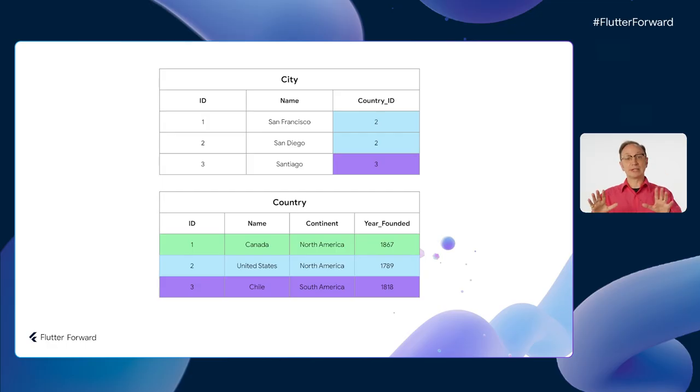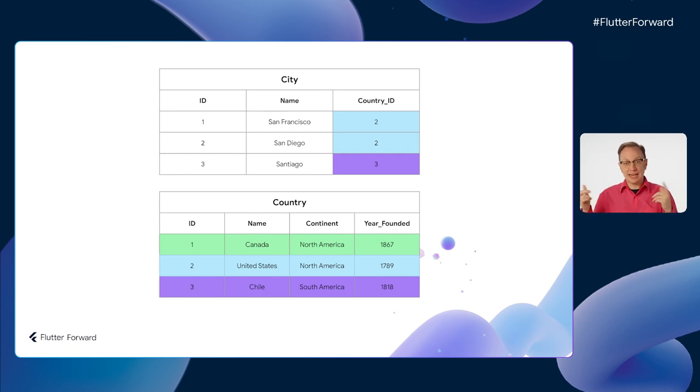Similarly to how state management is one of the most involved aspects of front-end development, operating a database is one of the trickiest aspects of back-end development. Relational databases are known for being cost-effective, performant, and flexible — kind of like giant structured spreadsheets where individual cells in one row can reference rows in a different sheet, which is where the relational databases get their name. If you're coming from a document data store like Cloud Firestore, you can loosely think of each database table as being similar to a Firestore collection.